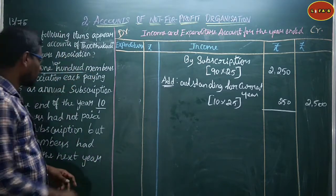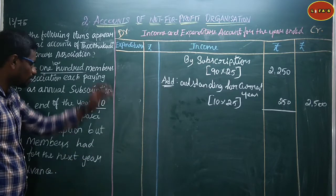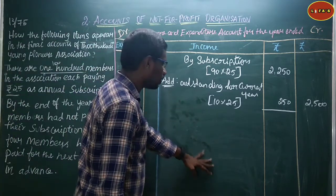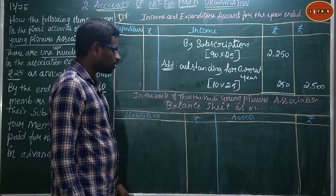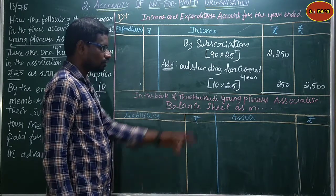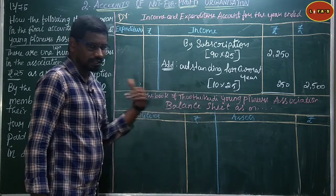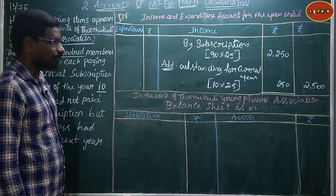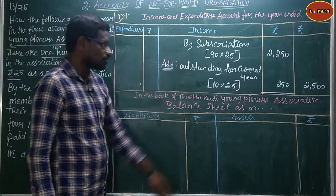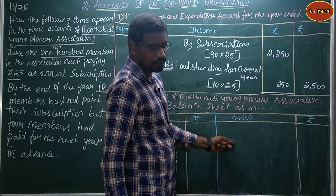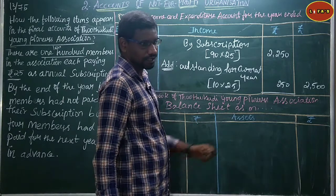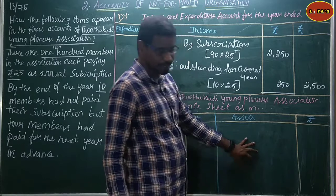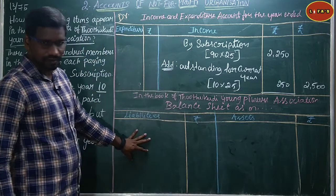Now, how will these items appear in the balance sheet? Books of Young Pioneers Association — balance sheet as on date. Liabilities side and assets side: outstanding subscription for current year, outstanding for previous year, and subscription received in advance.